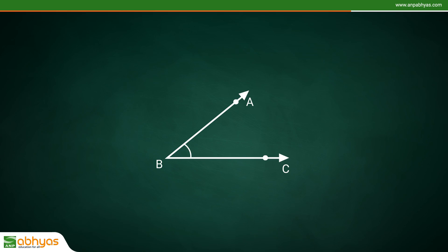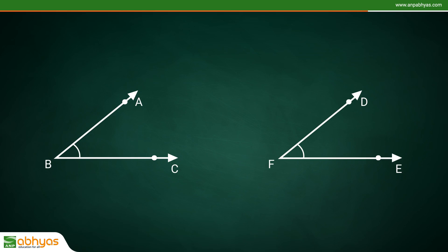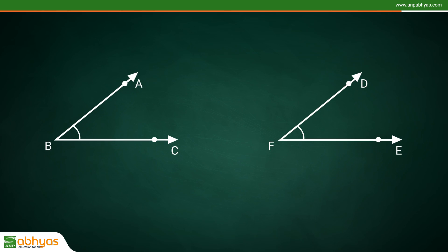Two angles of the same measure are congruent, irrespective of the length of arms of the angle. Angle ABC is congruent to angle DEF.